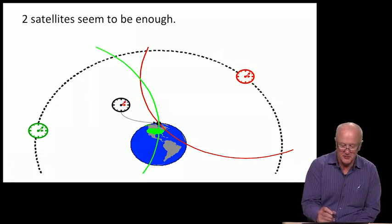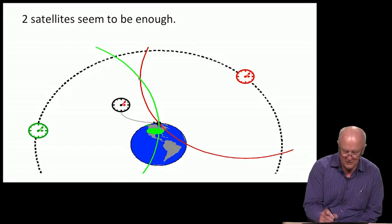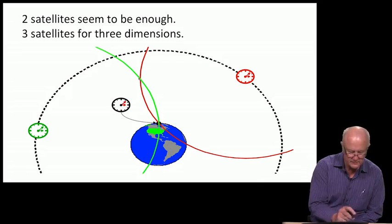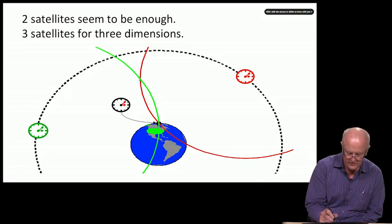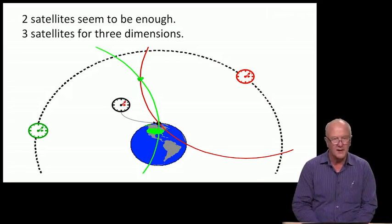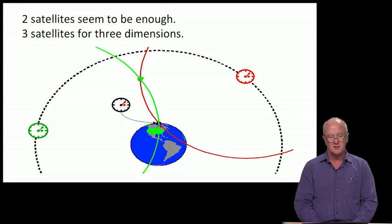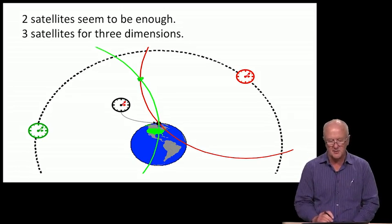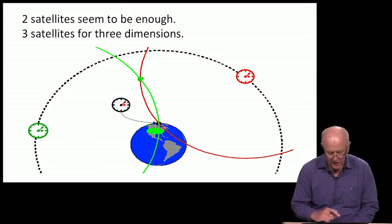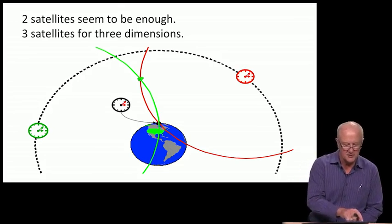The two lines of position overlap at the black dot, which is the true location of the user. Those two circles also overlap out in space, but we can discard that point. It would seem the user has been unambiguously established to be located here, north of Hudson Bay.